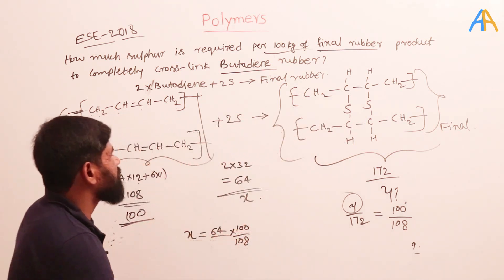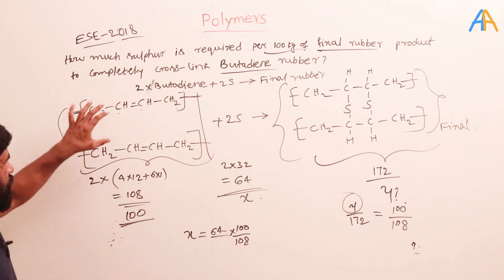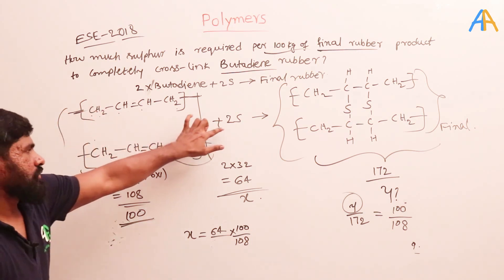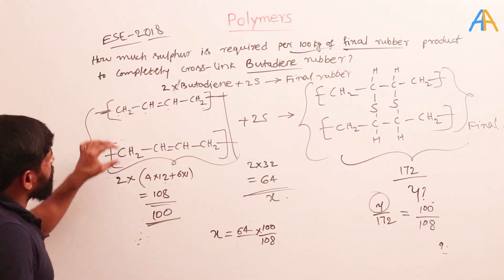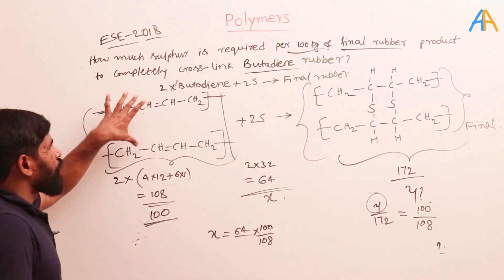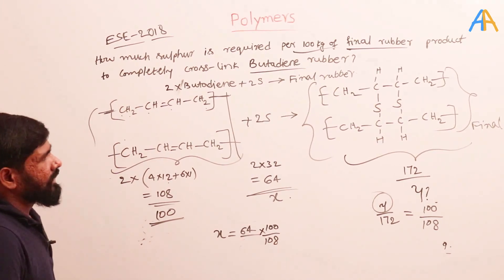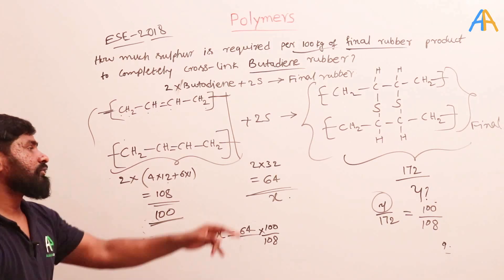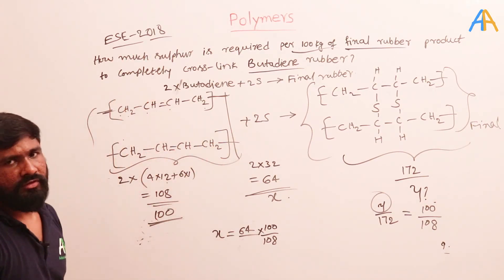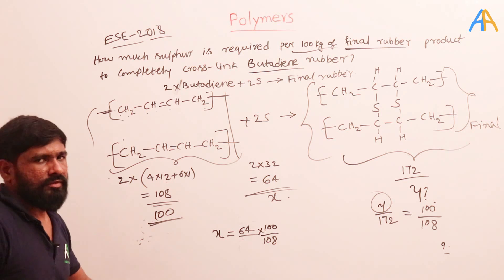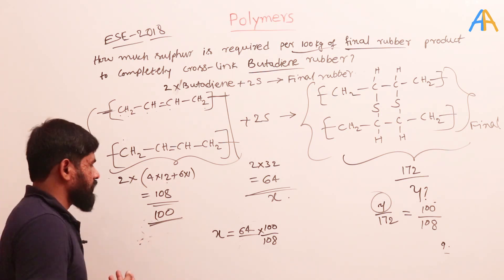This is a simple proportion, but the key logic is: you need to remember that two sulfur atoms participate in the reaction and two monomers of butadiene are involved. You also need to remember this structure; otherwise it is difficult to solve the problem in the examination.